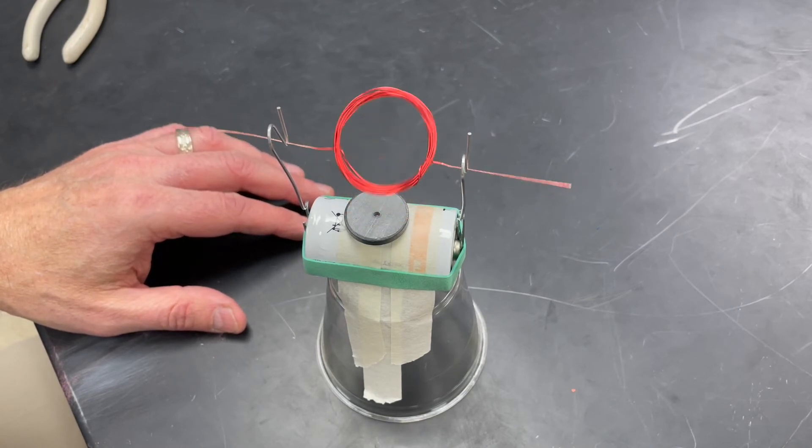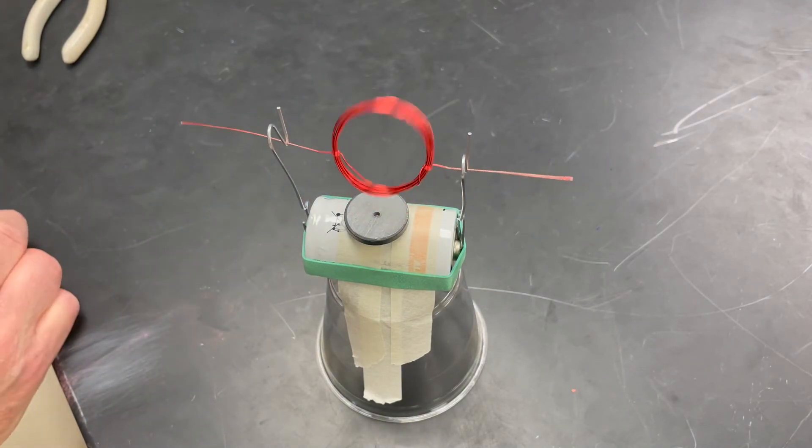Can you figure out how the coil is getting electricity? Can you figure out why we had to sand off that red paint?